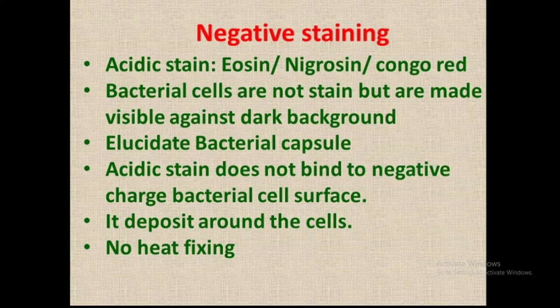Acidic stains — which are negative charge stains like eosin, negrosine, and congo red — are used in negative staining. They will not bind to the negative charge bacterial cell surface because both the cell surface and the stain are negatively charged. So the stain deposits around the cells, and bacterial cells are observed as colorless against the dark background. Also, heat fixing is not required in negative staining, but it is required in simple staining.